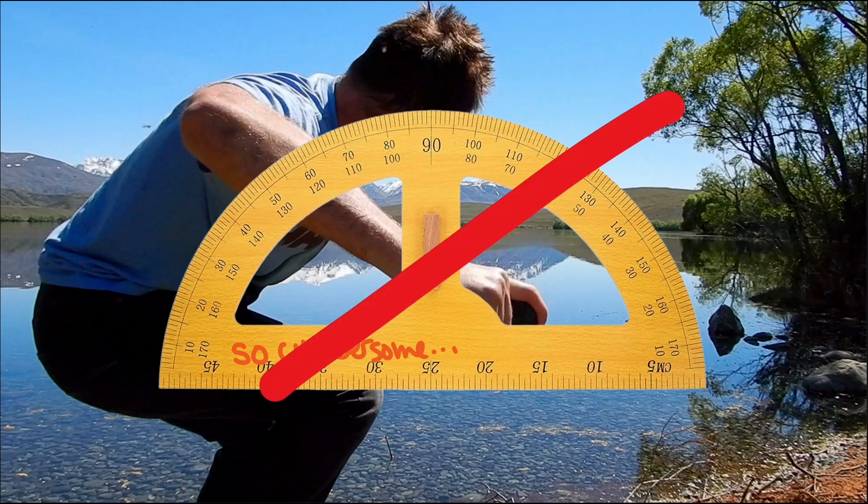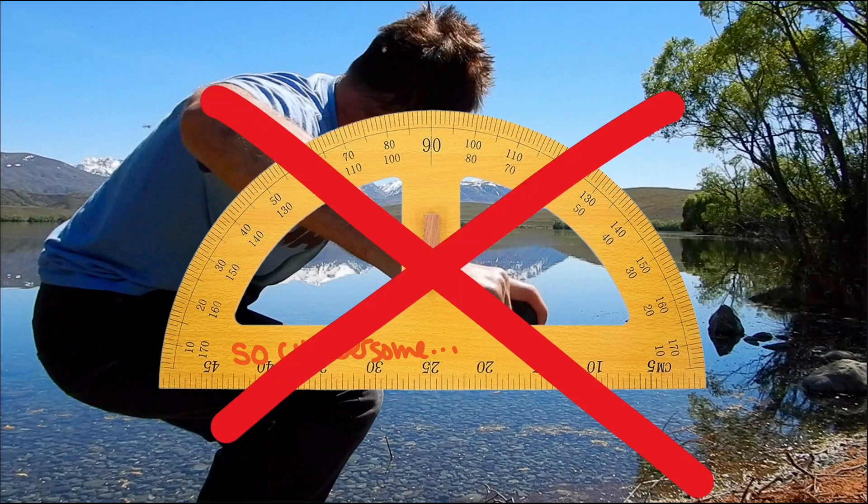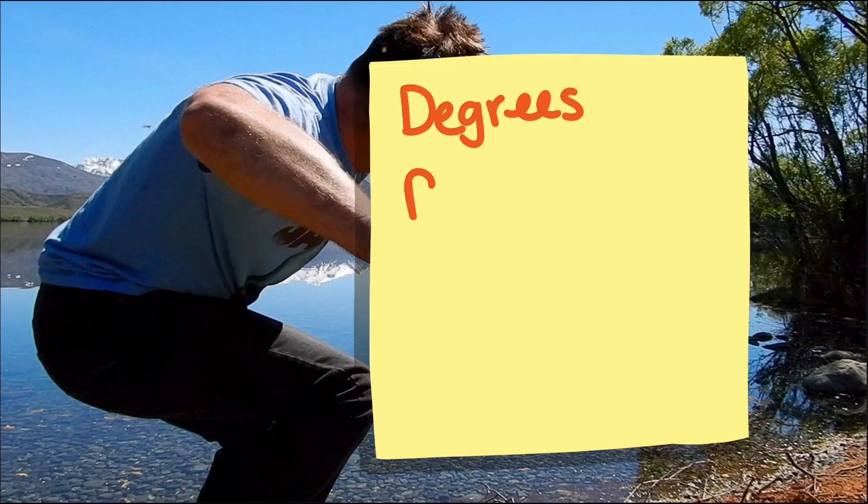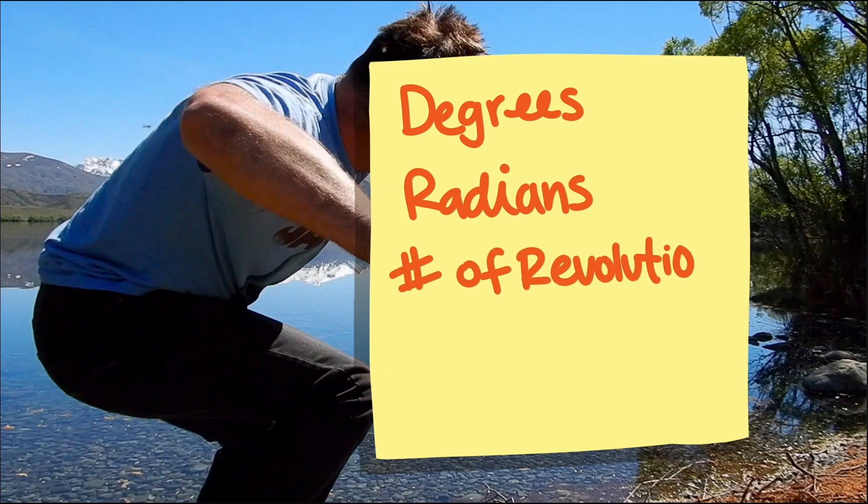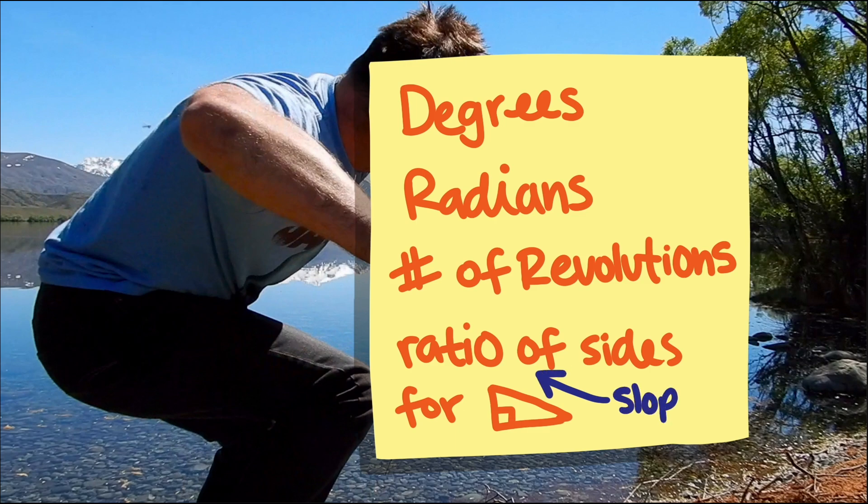There's a different way to measure angles that works better here than degrees. There are four common ways to measure angles: degrees, radians, number of revolutions, and the ratio of sides of a right triangle. The last one is more commonly known as slope, and that's the one that we can use to get a better rock skipping throw.